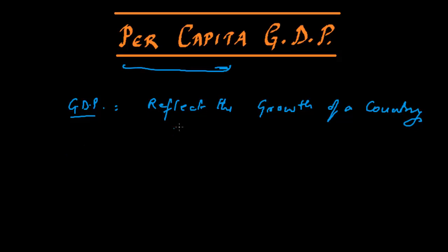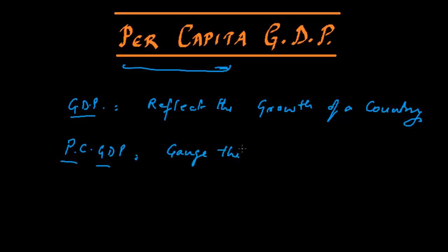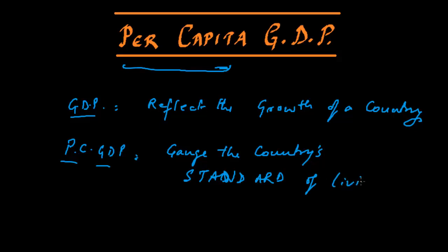As we know that the GDP was actually an indicator of the economic health of the country. This per capita GDP — let's write it PCGDP for short — this per capita GDP actually gauges the country's standard of living.